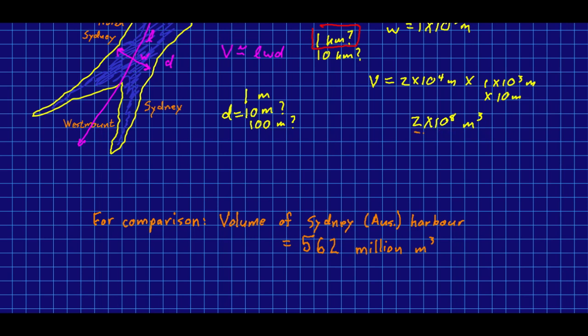So let's compare our answer for Sydney, Nova Scotia's harbour with something we can look up, like the volume of Sydney, Australia's harbour. So Wikipedia, which for something simple and factual like this is probably pretty correct, says that the Sydney, Australia harbour is 562 million metres cubed. And so that's 5.62 times 10 to the 8 metres cubed. And so we're in the same order of magnitude. And that means our answer is probably pretty believable.